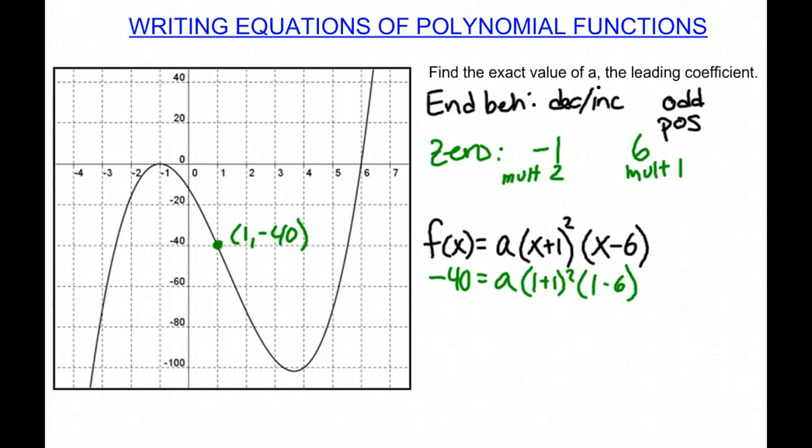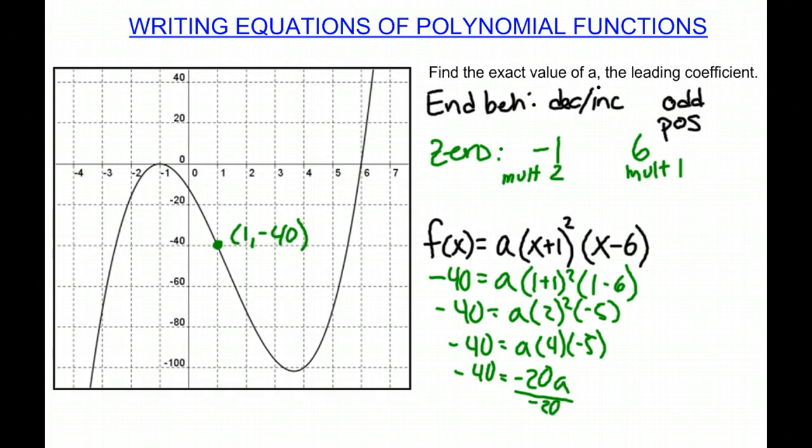And I'm just going to simplify this down. Negative 40 equals a, 2 squared times negative 5. Negative 40 equals a, 4 times negative 5. 4 times negative 5 is negative 20a, and that equals negative 40. We're going to divide by negative 20, so then a will equal 2.